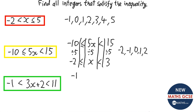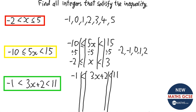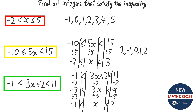This last one is a little bit tricky but the same principle. First, subtract 2 from each part: −1 − 2 = −3, 3x + 2 − 2 = 3x, and 11 − 2 = 9. So −3 < 3x < 9. Then divide by 3: −1 < x < 3. The integers are 0, 1, and 2 — it can't be equal to −1 or 3.